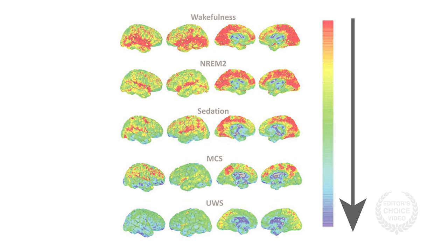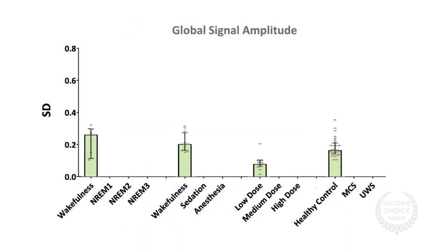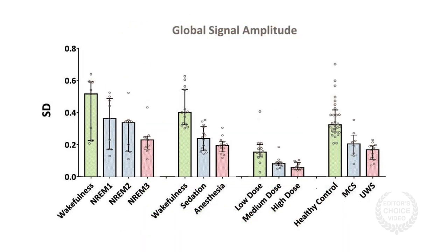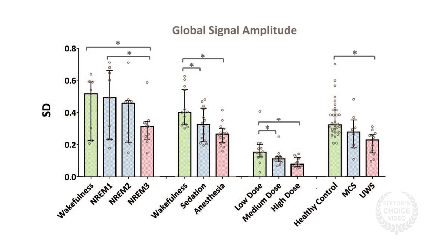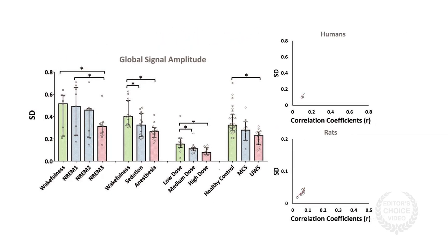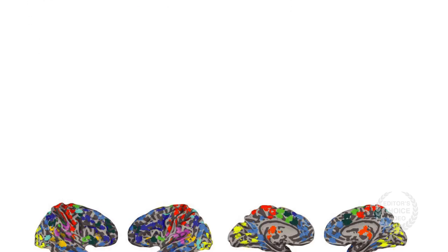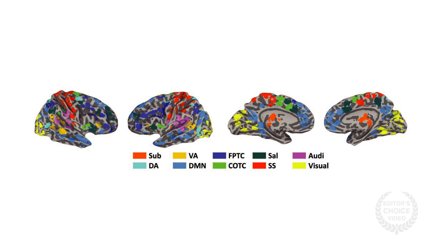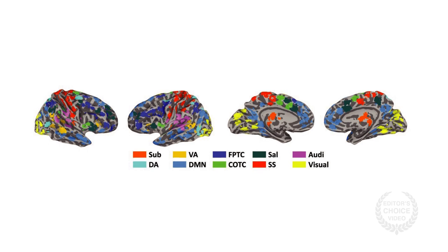The global signal amplitude was highest during wakefulness and fell as humans and rats became more and more unconscious. There was a strong relationship between the global signal amplitude and the global signal functional connectivity. The team also compared the global-to-network functional connectivity to see which regions of the brain had less connectivity in different states.